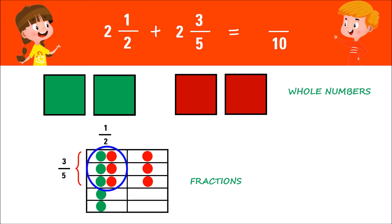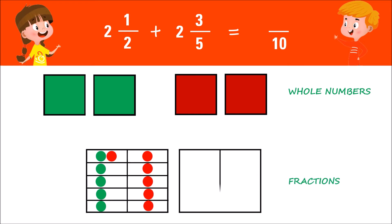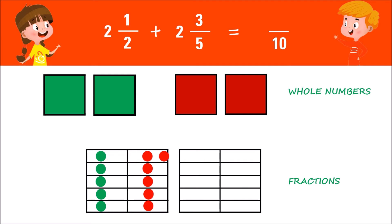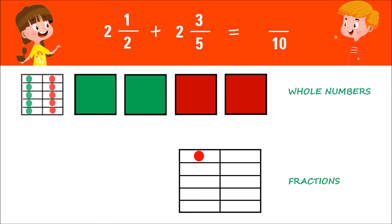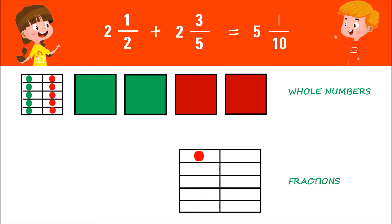For boxes with both green and red chips, move the red chips to empty boxes. Since there is still one box with green and red chips, make another two columns and five rows and move over the remaining chip. As you can see, the first box of the fraction is all filled with green and red chips, so it is now considered a whole, while the other box is our fraction. As a result, the answer is five and one tenth.